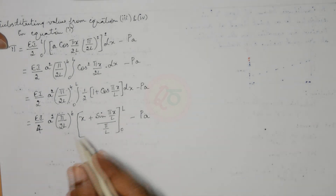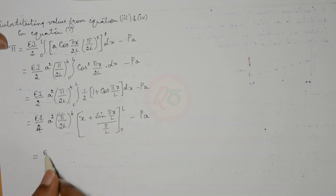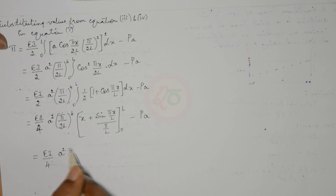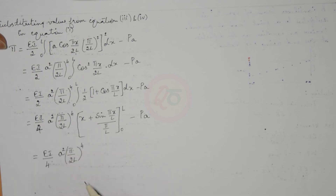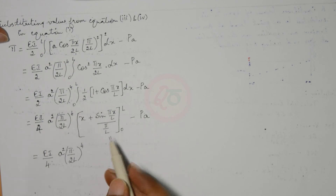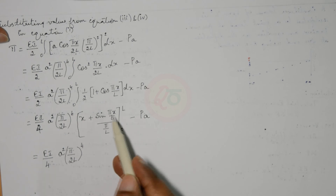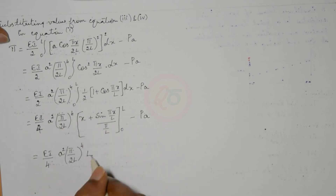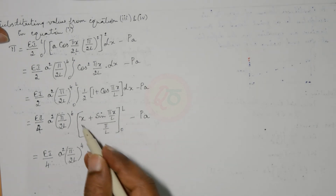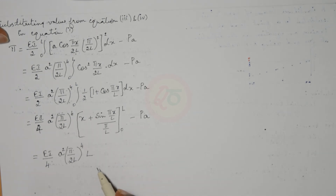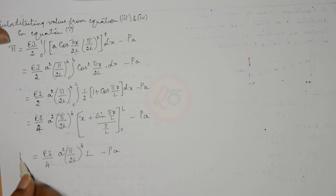Substituting the limits: the upper limit gives L plus sin(π) which is 0, so we get L. The lower limit gives 0. Therefore the integral evaluates to L. So pi equals (EI/4)·a²·(π/2L)⁴·L minus P·a. This is our potential energy functional.